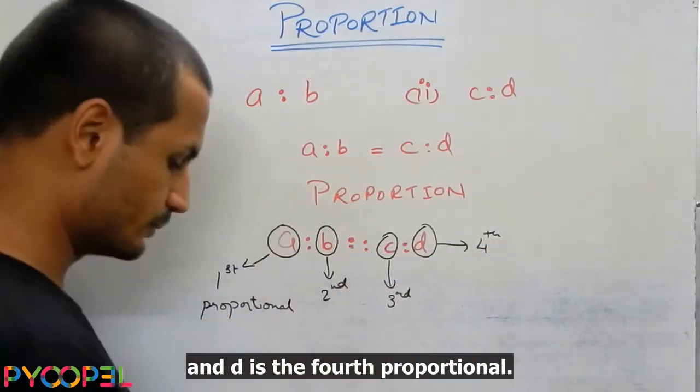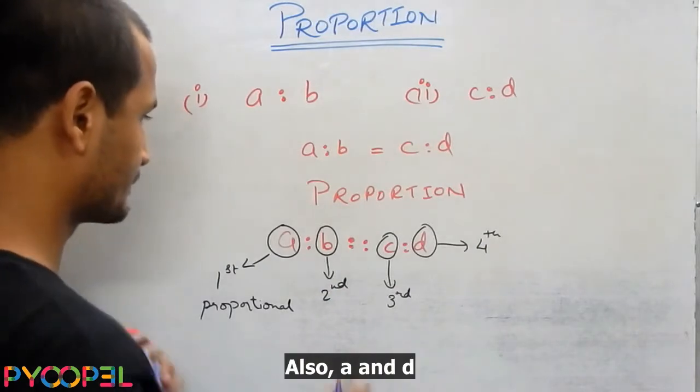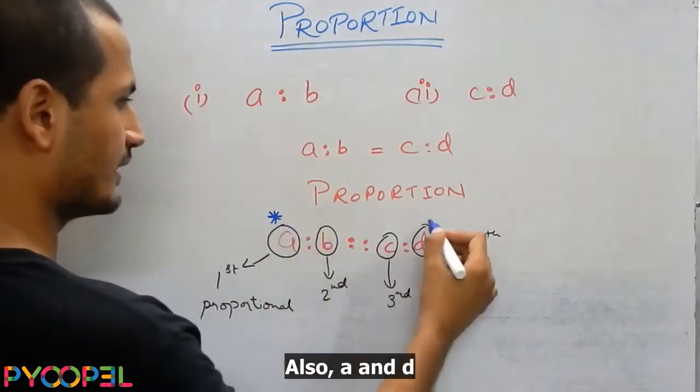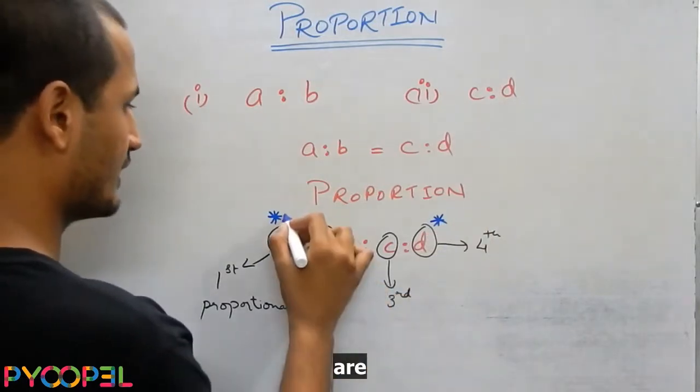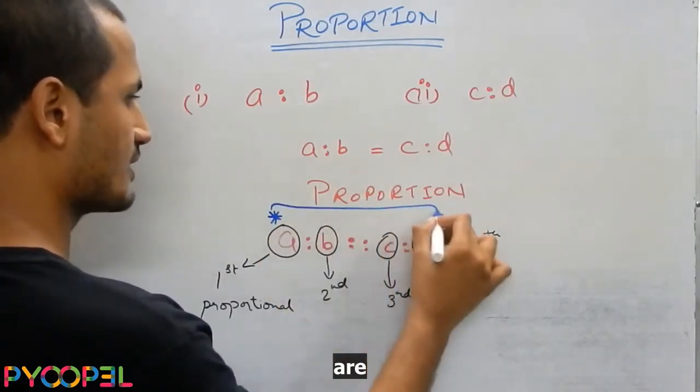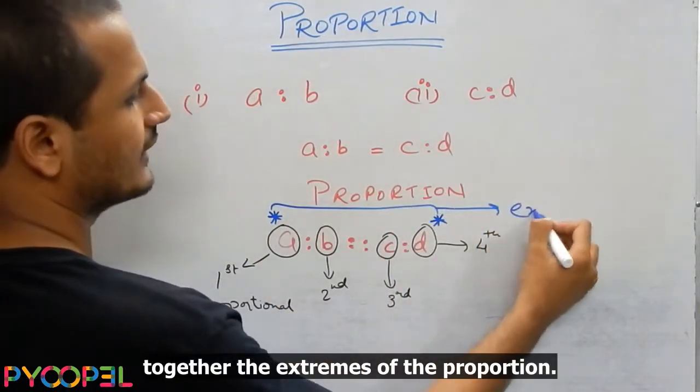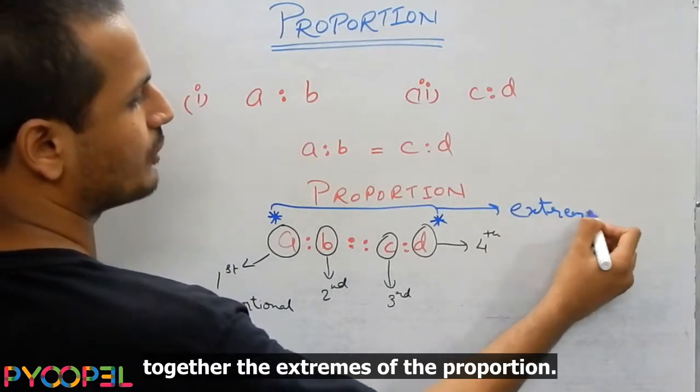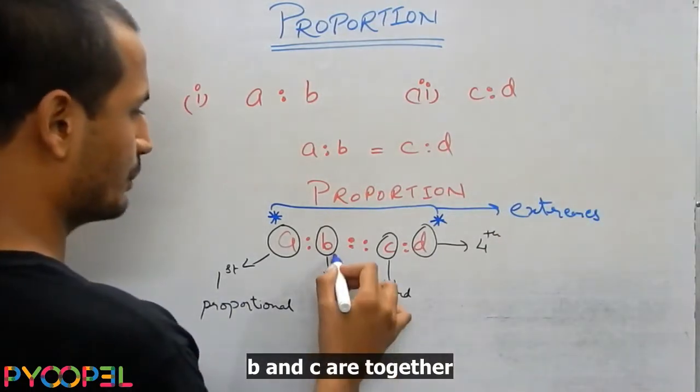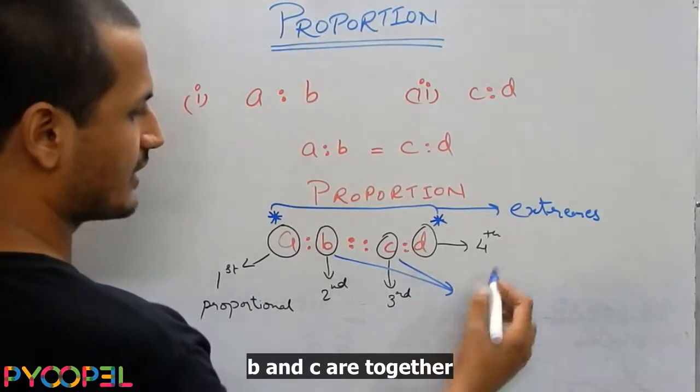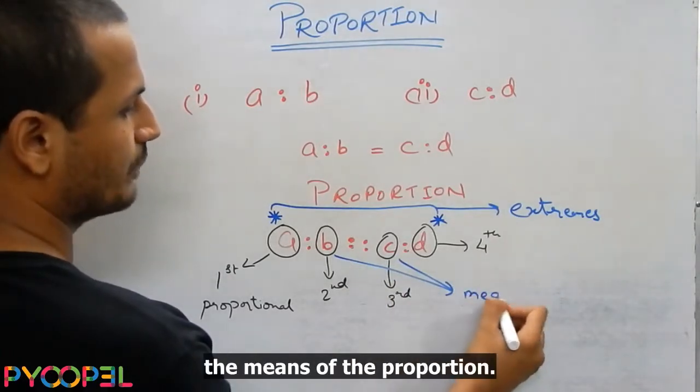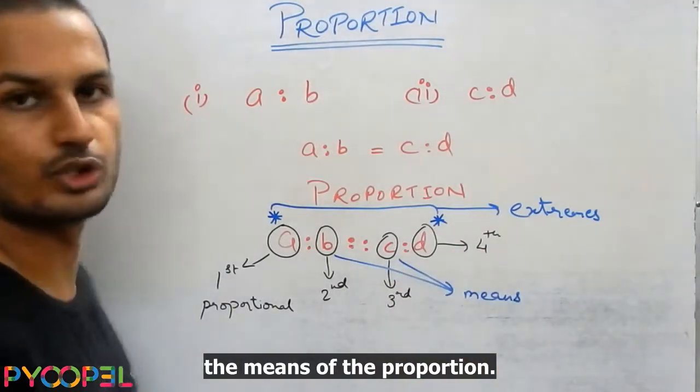Also A and D are together the extremes of the proportion. B and C are together the means of the proportion.